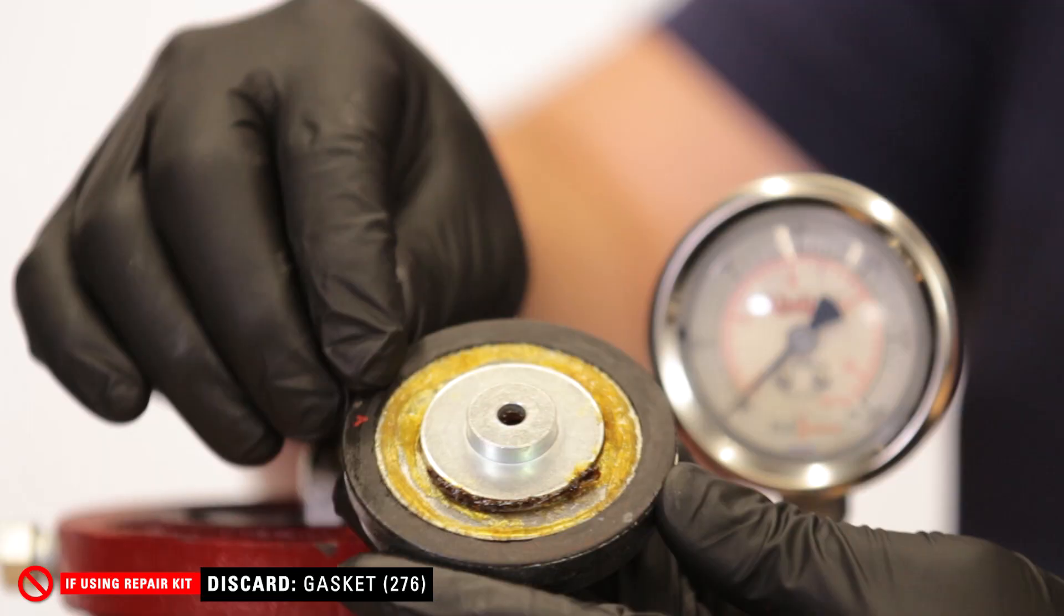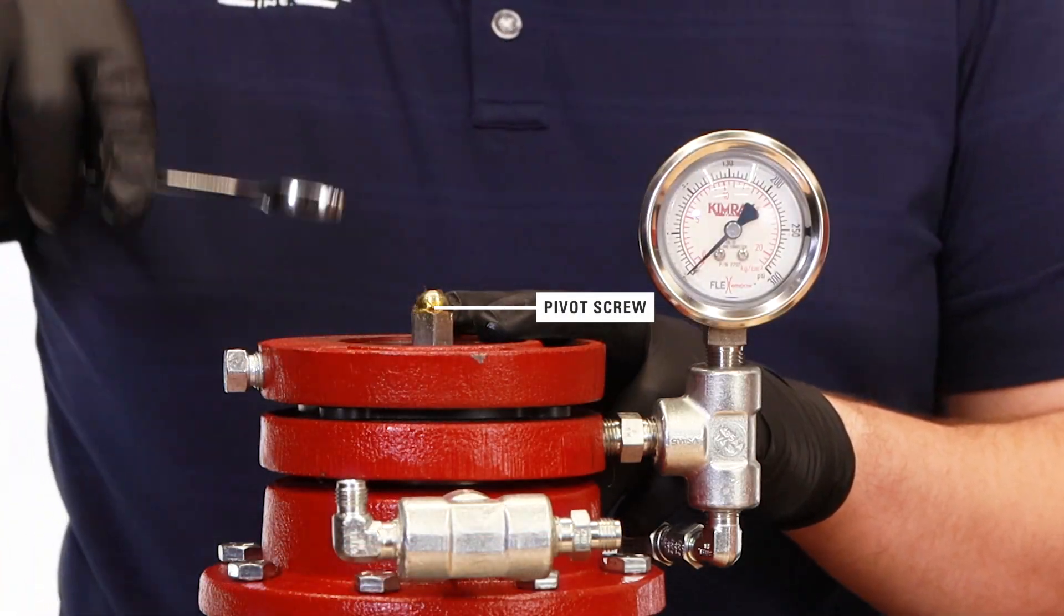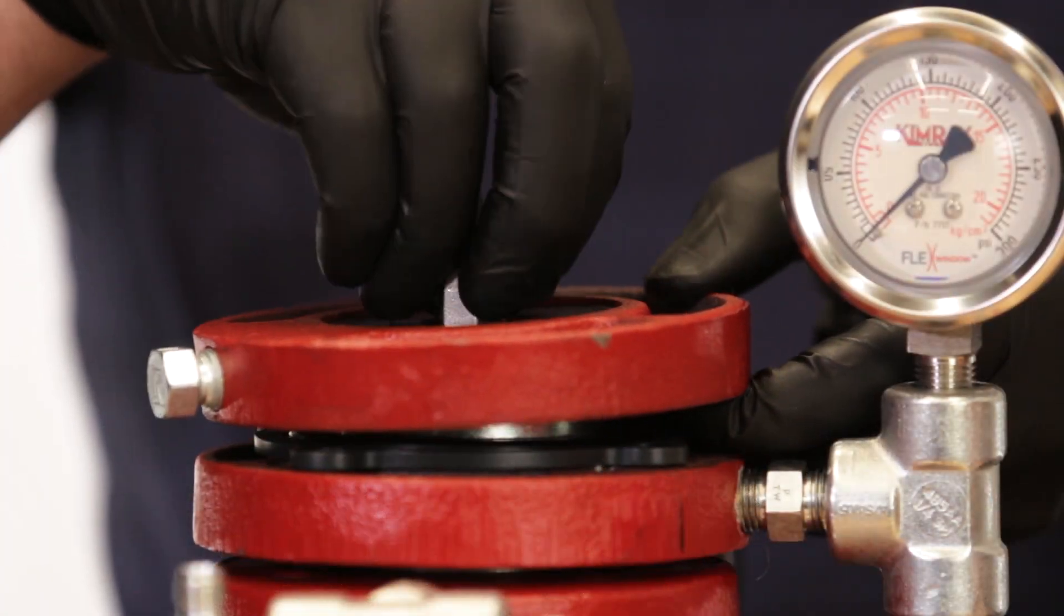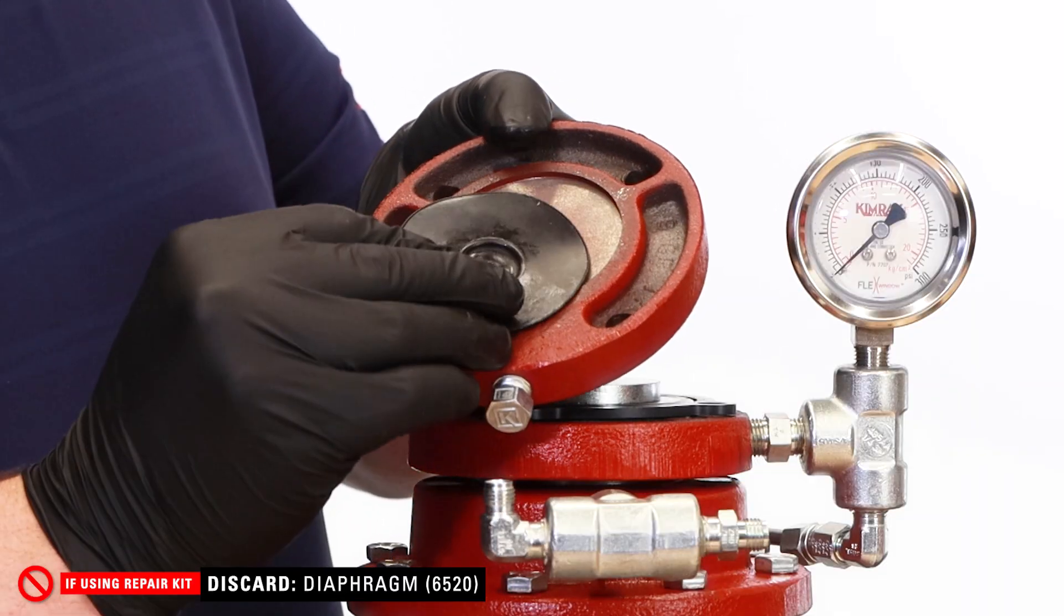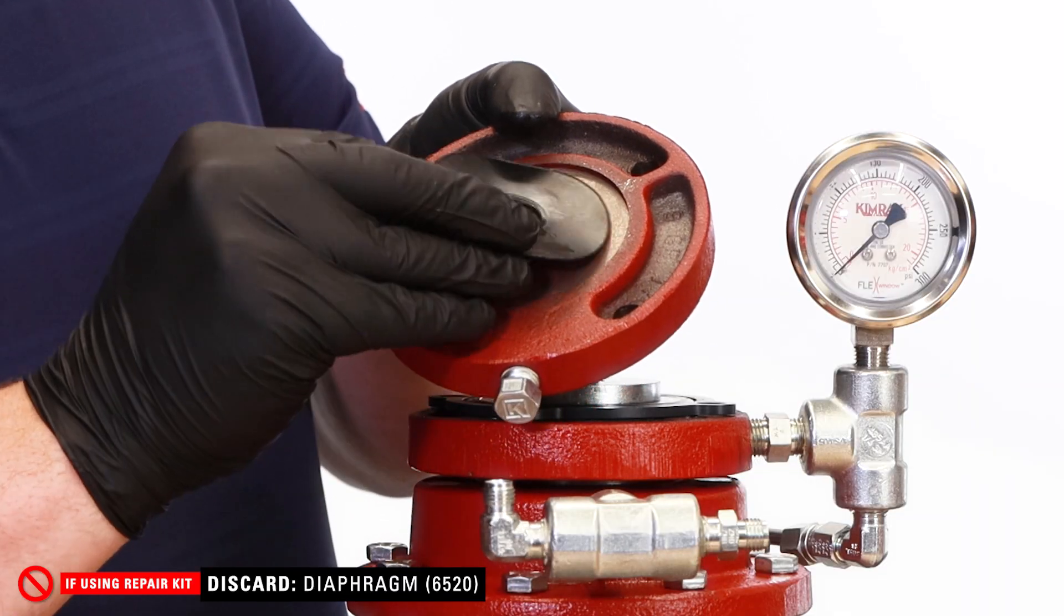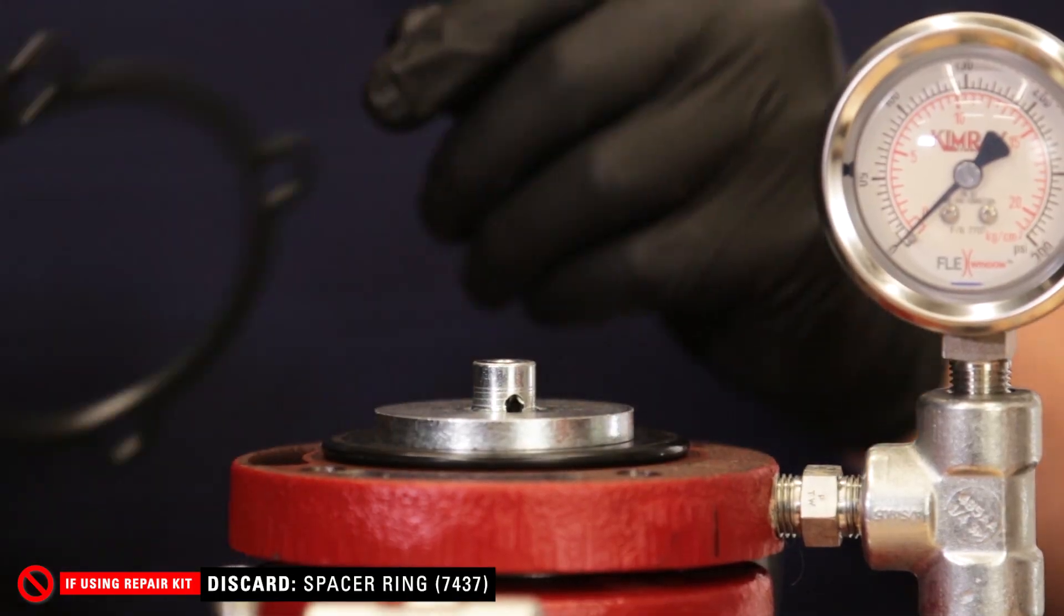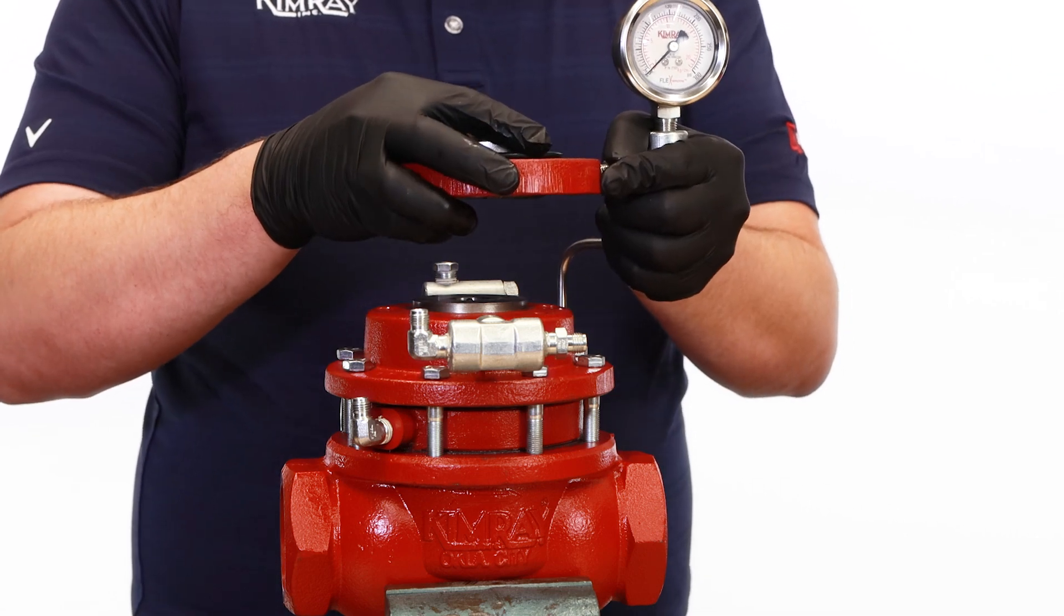Inspect the gasket on the spacer for damage. Remove the pivot screw with a 9/16th wrench. Remove the upper pilot housing and inspect the diaphragm for damage. If it's damaged, it will need to be replaced. Remove the spacer ring. Remove the lower pilot housing along with the pressure gauge and tubing. Set this aside and we will disassemble it in the vise later.